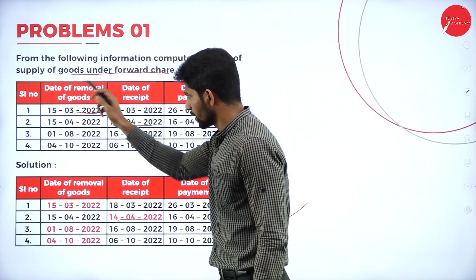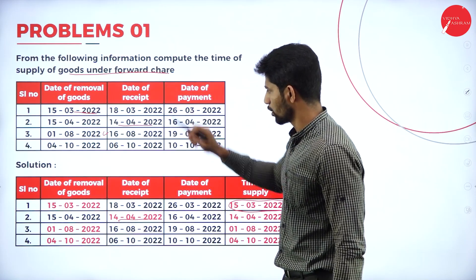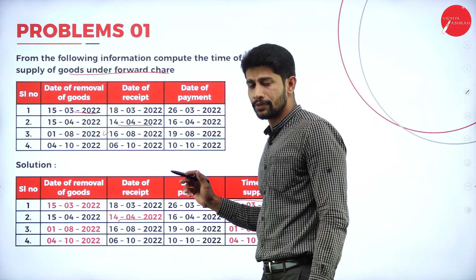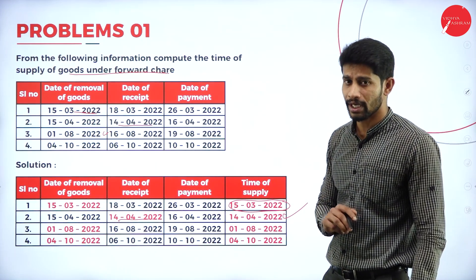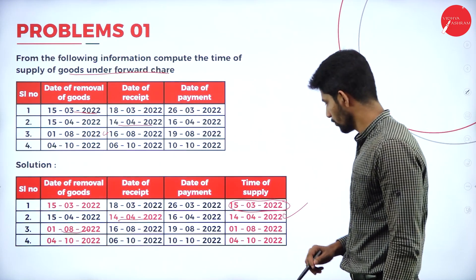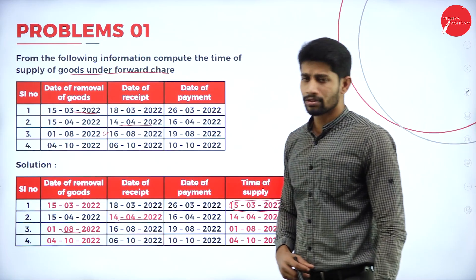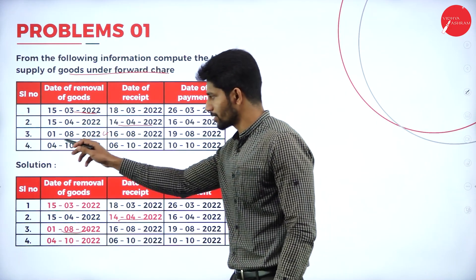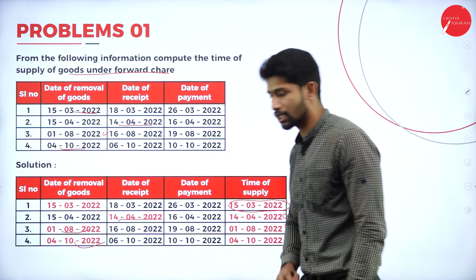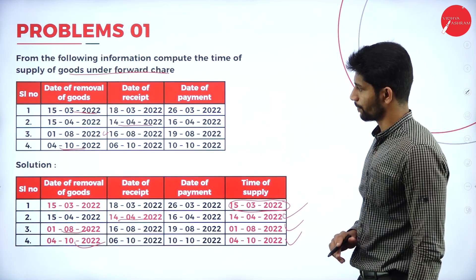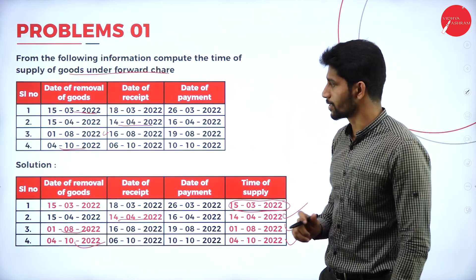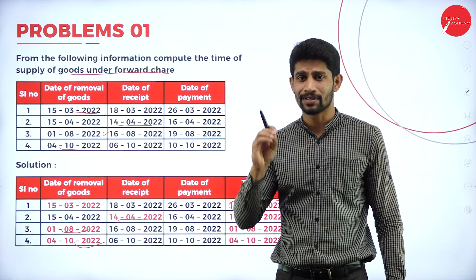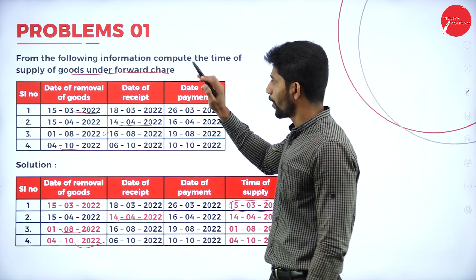Case 3: Date of removal is 1st August 2022, date of receipt is 16th August 2022, and date of payment is 19th August 2022. The earliest date is 1st August 2022, so the time of supply is 1st August 2022. Case 4: Dates are 4th October 2022, 6th October 2022, and 10th October 2022. The earliest date is 4th October, so the time of supply is 4th October 2022. This is how we compute time of supply under forward charge mechanism — the earliest among date of removal of goods, date of receipt, and date of payment.